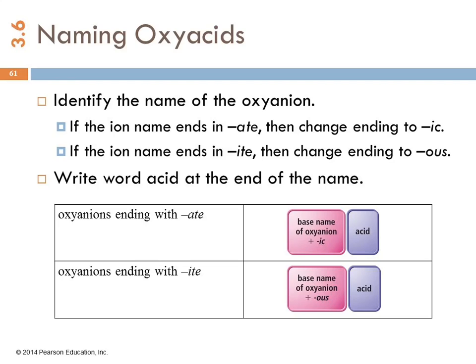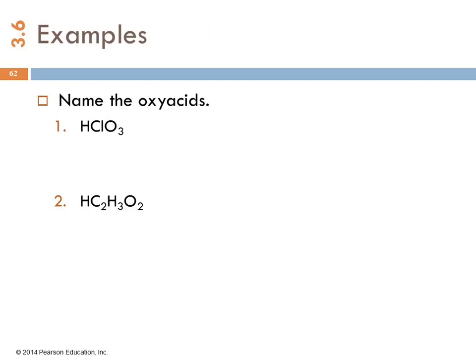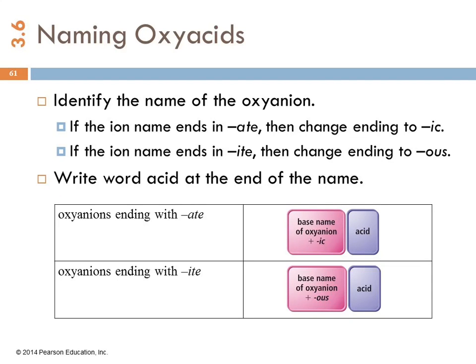Oxyacids have oxygen in them. They've got an oxyanion. And the name of the oxyacid is based on the name of the oxyanion. So we look at the ion name. If it ends in -ate, we're going to change the ending to -ic. If it ends in -ite, we'll change the ending to -ous. And then we're going to put the word acid after that. I need to give you my silly mnemonic sentence for that. Because it's one of those things where you've got -ic and -ate, -ite and -ous, and how do you remember which ones go together?